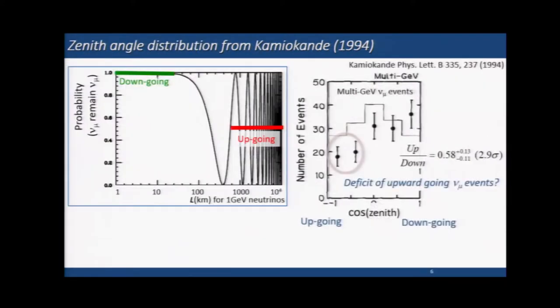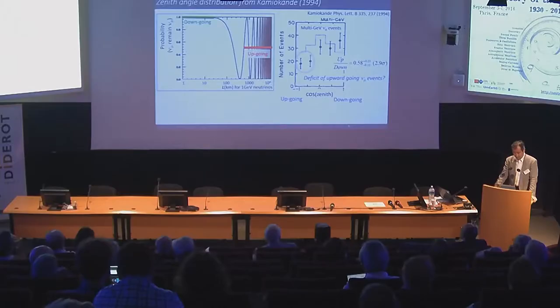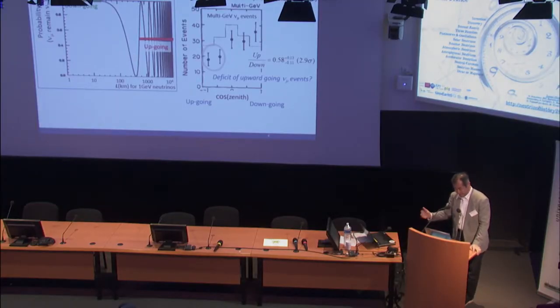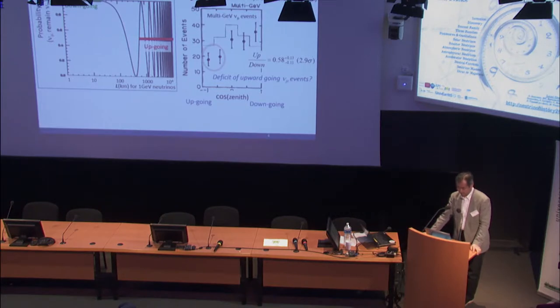Before Super-Kamiokande, in Kamiokande, after we published the muon neutrino deficit in 1988, we really wanted to get some hint on the physics behind it. From the beginning, one possibility was neutrino oscillations. We wanted a stronger hint. If we consider the oscillation probability, for down-going neutrinos, depending on the oscillation parameters, there might be essentially no oscillation effect, but for upward-going neutrinos, there could be a substantial oscillation effect.